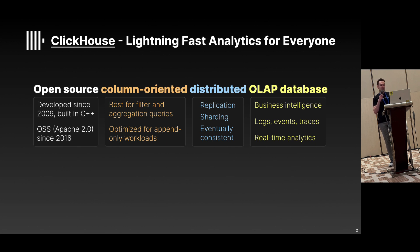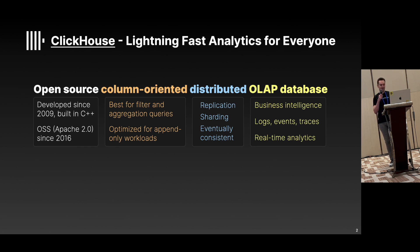ClickHouse is a column store and it is best suited for filter and aggregation queries. Under the hood, ClickHouse uses a storage layer based on LSM trees, and this means the database works best with append-only workloads, though it is obviously not only for append-only workloads. To achieve high availability and load balancing, users can configure data replication and sharding across multiple ClickHouse nodes in a cluster. The replication schema is fault-tolerant and by default it is eventually consistent.